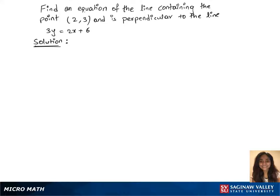To find an equation of the line containing the point (2,3) and perpendicular to the line 3y = 2x + 6, we will first find the slope from this equation.